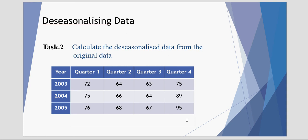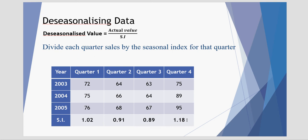There's our summary. The next task is to calculate the deseasonalized data from the original data. This is relatively simple. We take the seasonal index for quarter 1 and divide every one of the quarter 1 values by that seasonal index.